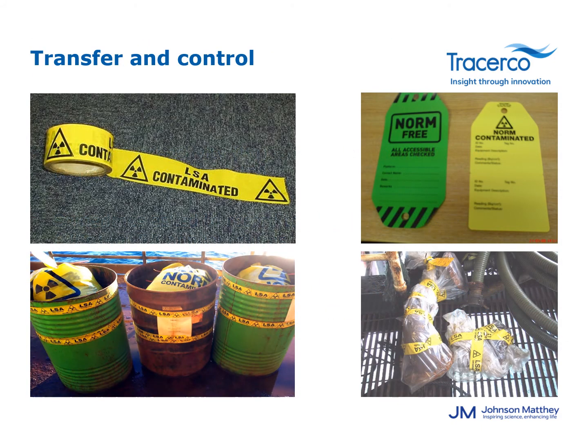Any items or materials sent onshore for cleaning or disposal must be adequately wrapped or otherwise contained to avoid any spread of contamination. Individual items will need to be suitably labelled, and in particular it should be clear whether the item or material is contaminated or not. Yellow NORM contaminated labels are used, and to avoid any confusion, green NORM-free labels are also used when consigning non-contaminated items onshore.